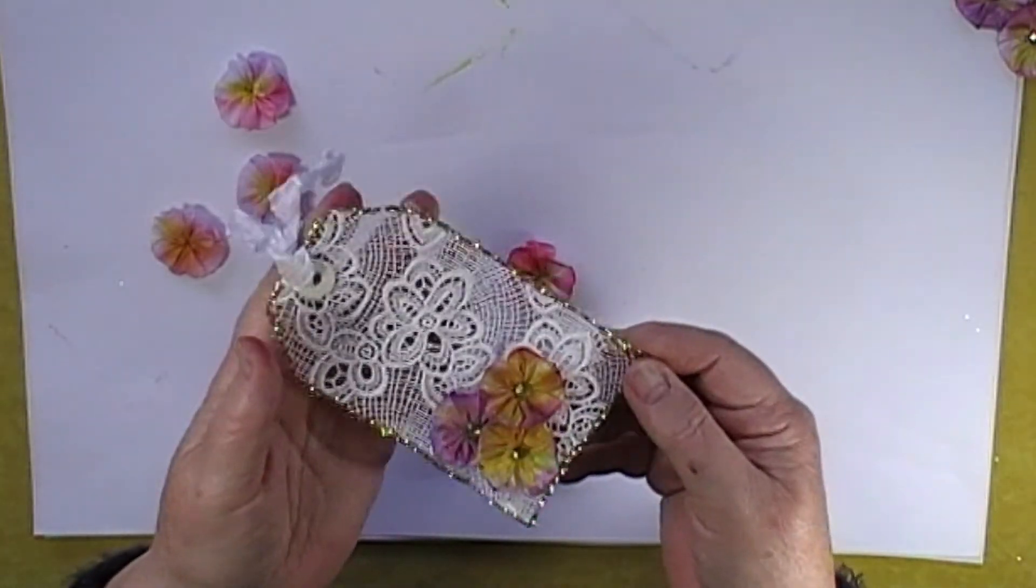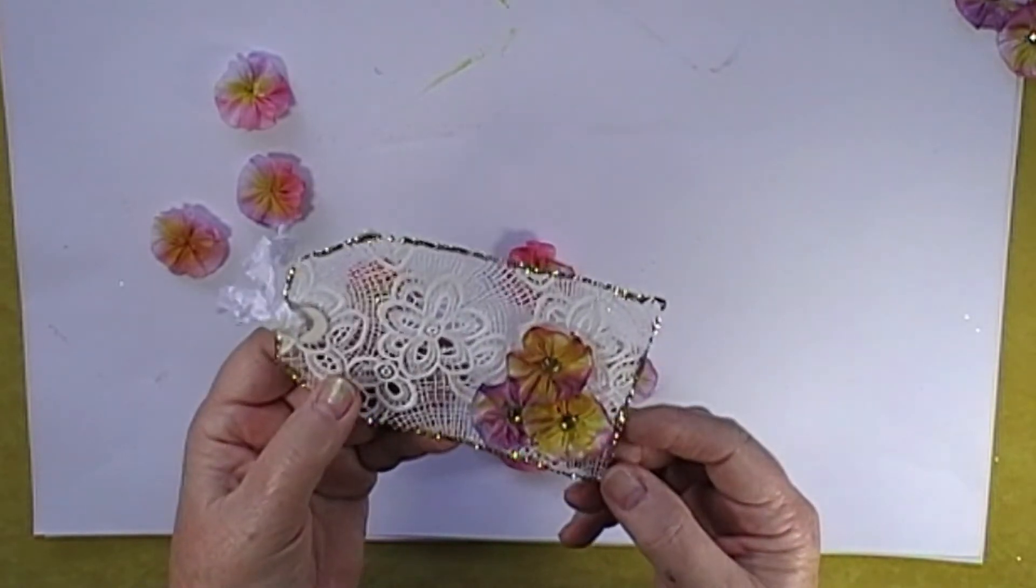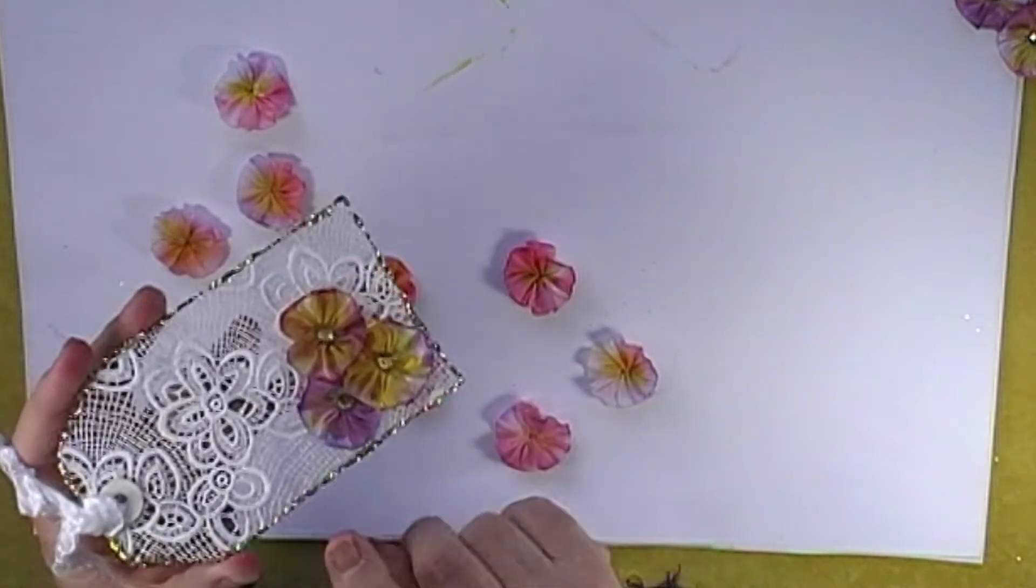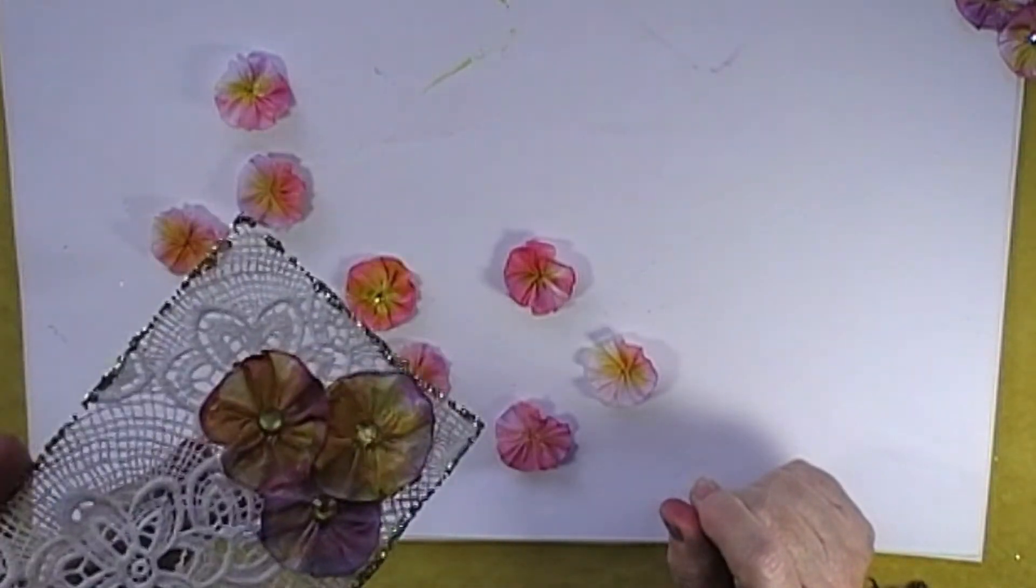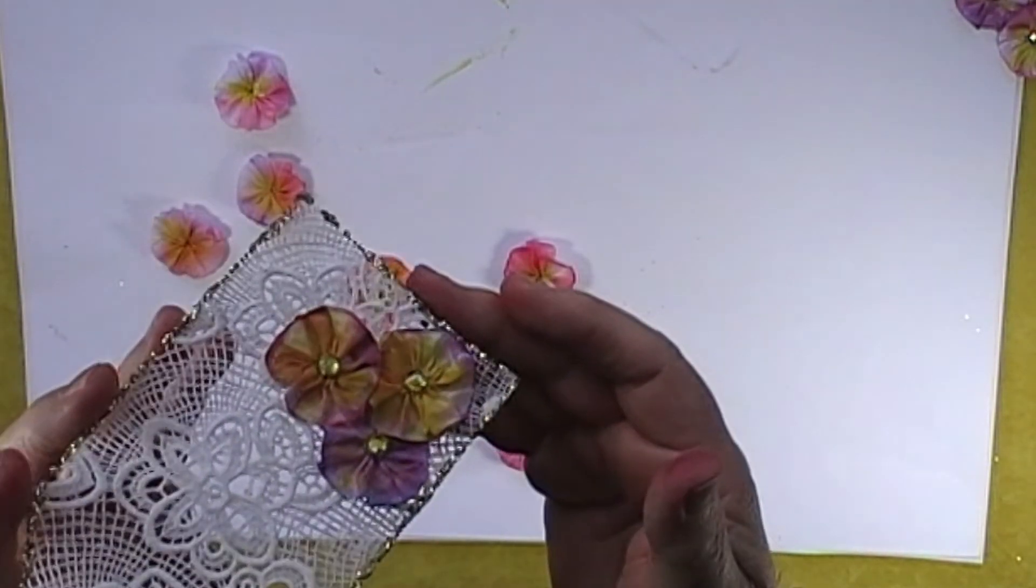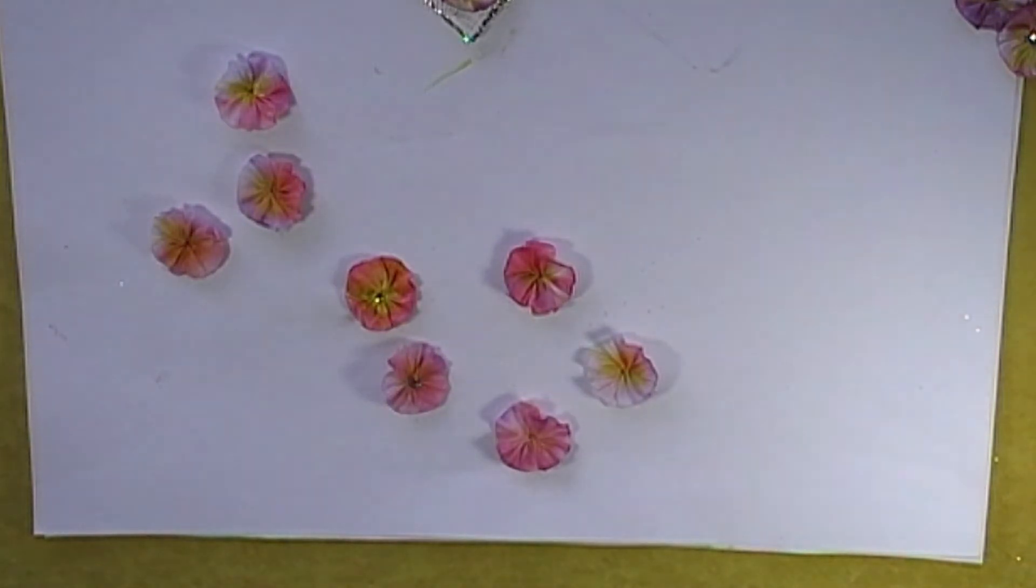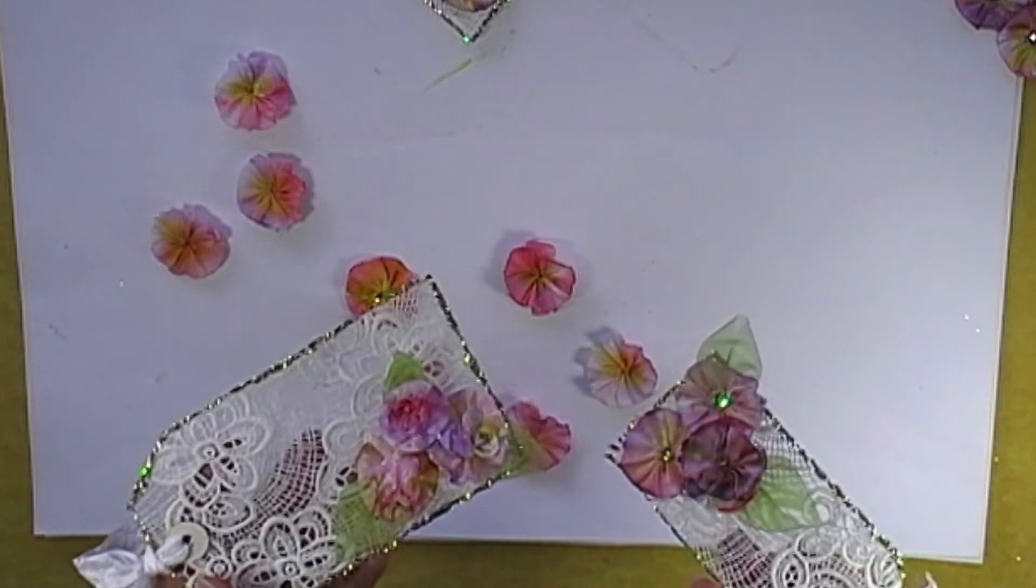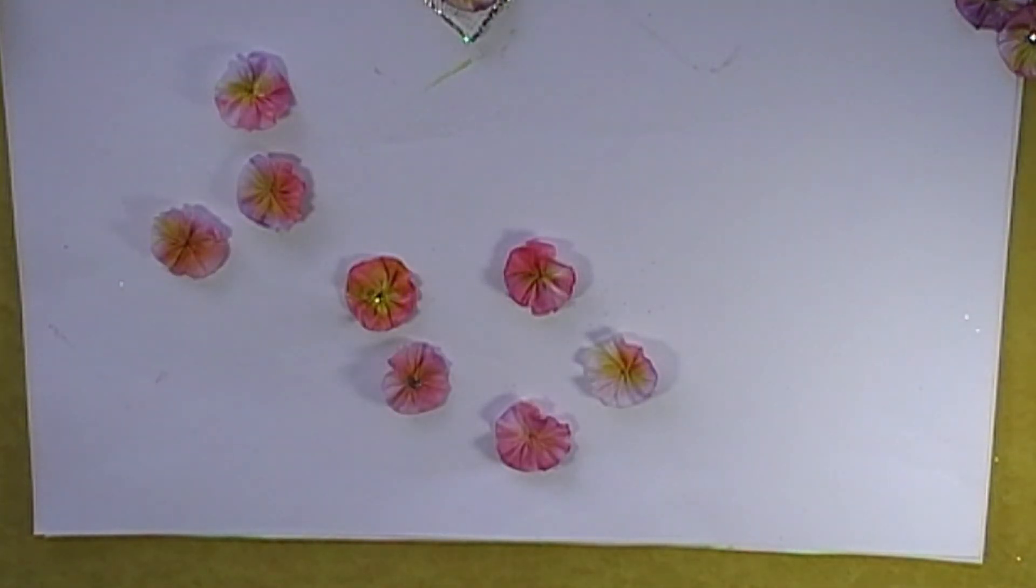I did these tags which are on lace and the lace I just stiffened with some PVA and let it dry and then cut out a tag and I put some glitter around the edge and then just put on three of the little flowers. These ones are the same. I added some leaves. A little round one.